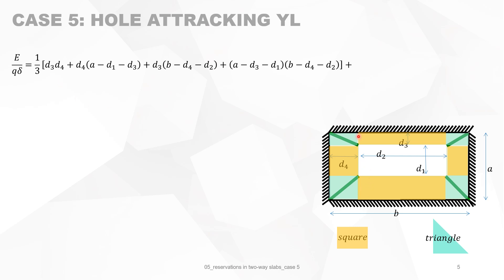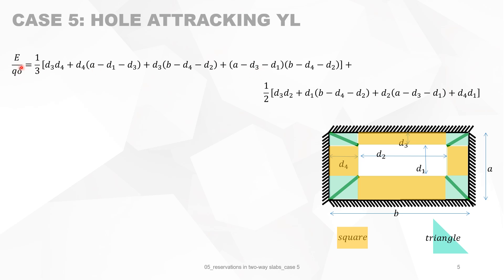The work done by the external loads for the triangular portions — the green portion — is one-third of the surface of the slab times the load. For instance, one element is D3 times D4 divided by 2, but we have two of them, so it becomes D3 times D4 times one-third. We then go over each portion in turn and sum all those terms, arriving at one-third. Then we calculate the rectangular elements in orange, where the mean deflection is one-half of delta. You can work it out and find this simple formula.